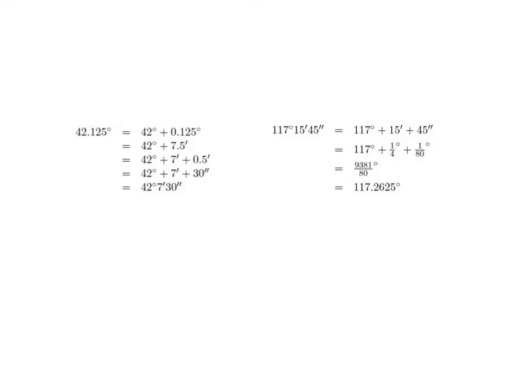The key to that is the fact that 60 minutes equals one degree, and 60 seconds equals one minute. So these conversion factors are used to convert from decimal degrees to degrees minute seconds, and also from degrees minute seconds to decimal degrees. And you will see examples in the book as well as in other videos.